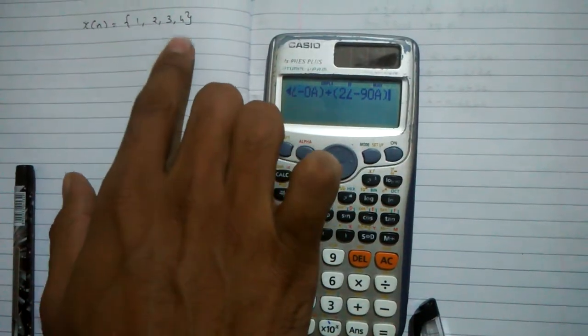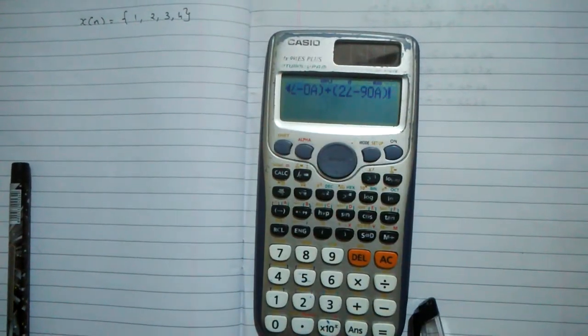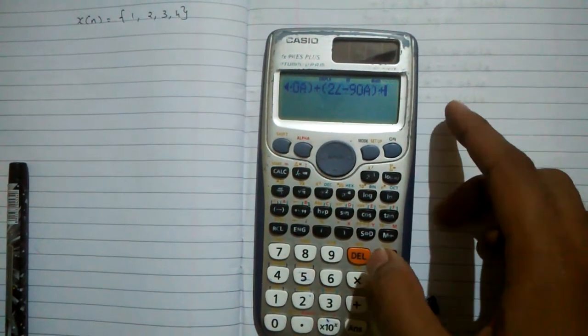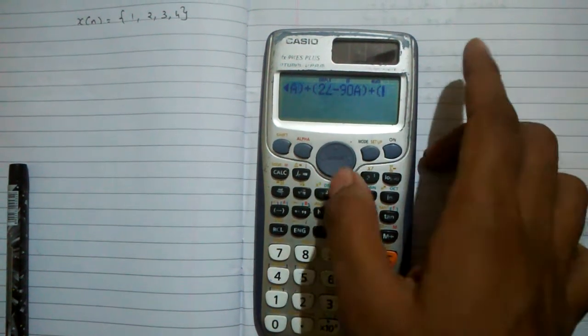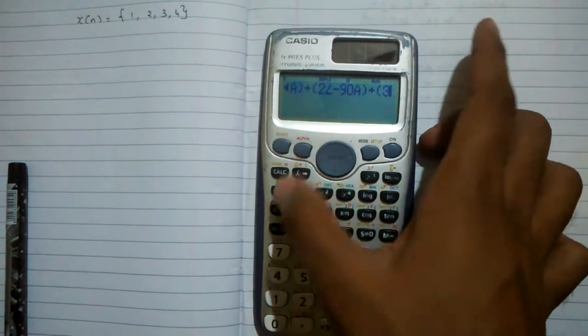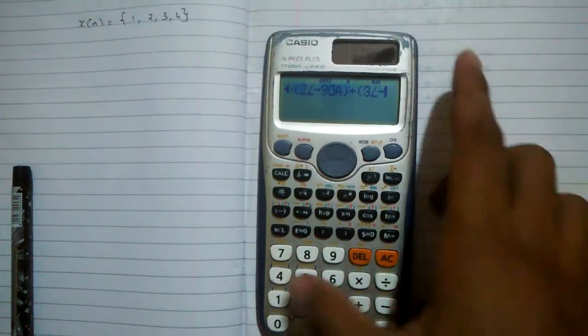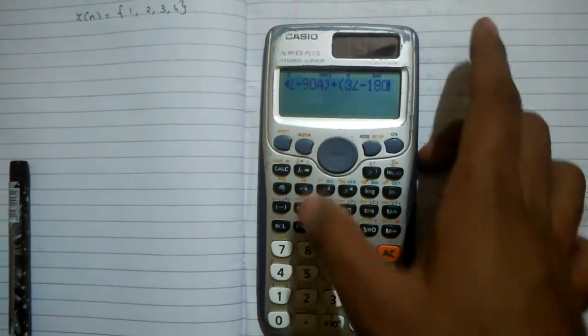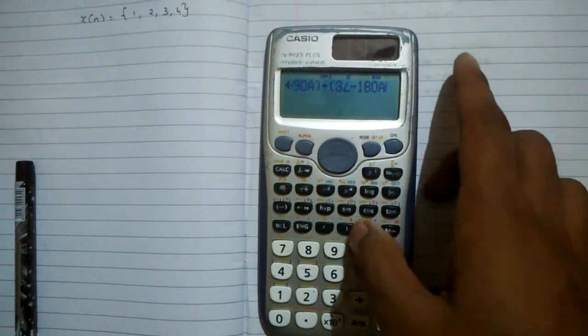You have to enter all this 1, 2, 3 and 4 in the calculator. Next is 3. Plus open bracket 3 shift angle minus 180 alpha A and then close bracket.